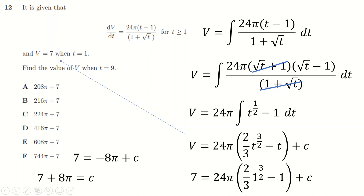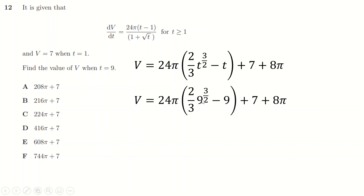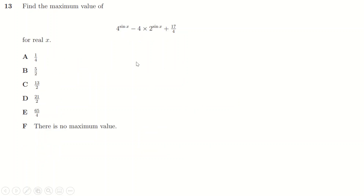Using the initial condition v = 7 when t = 1: substituting gives 7 = (2/3)(1) - 1 + C = -1/3 + C... wait — 2/3 - 1 = -1/3, so 7 = (-1/3)(24π) + C means C = 7 + 8π. Substituting t = 9: 9^(3/2) = 27, times 2/3 is 18, minus 9 is 9, times 24π is 216π. The answer is 216π + 7.